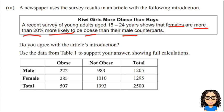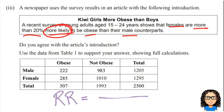We've been given a table from the first part and need to find the relevant probability. As soon as I see the words 'more likely', that is my hint that I want to find the relative risk — one probability divided by another.